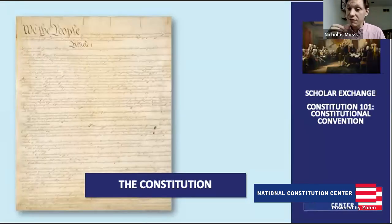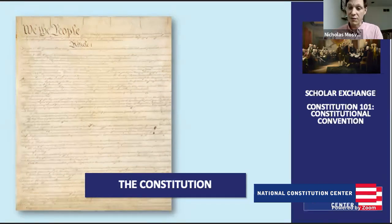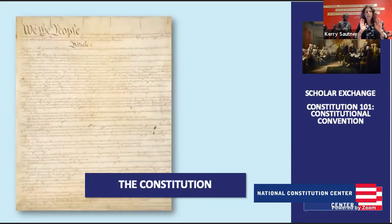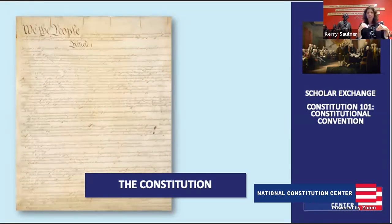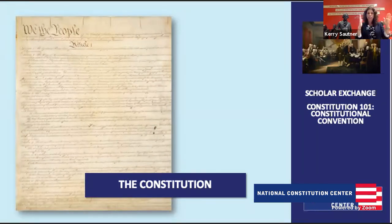Even though people will support going from the Articles to the new Constitution, they are still concerned with doing too much to take away power from state governments. There needs to be a balance between the stronger central government being created and the state governments that already exist. I think about it like a layered cake and also a Neapolitan ice cream at the same time. Federalism means there's a national government, state governments, and local governments — that's the cake with layers up and down. And then horizontally, you have the three branches and the separation of powers.